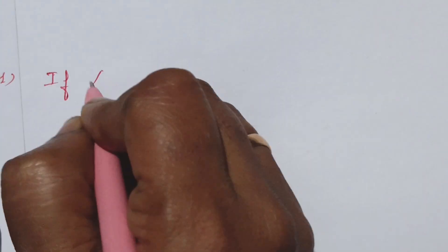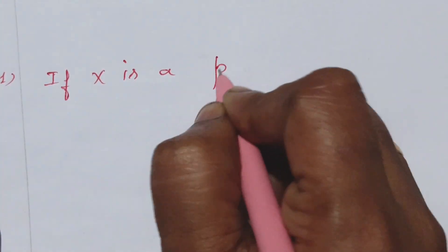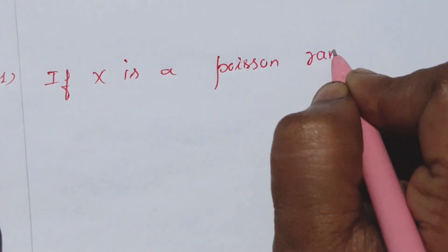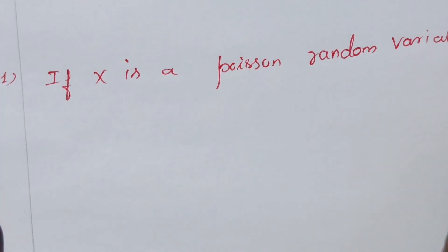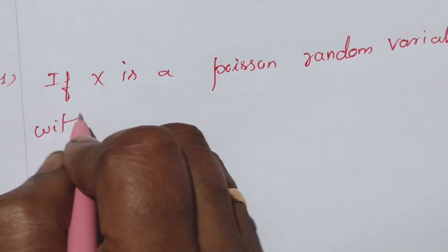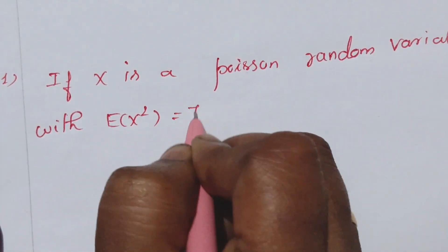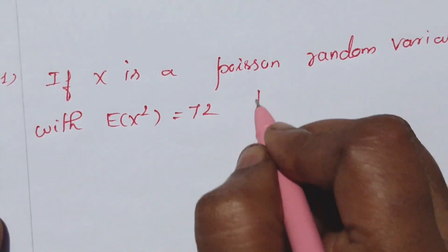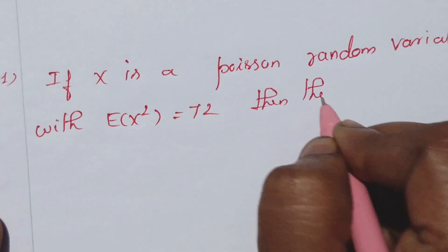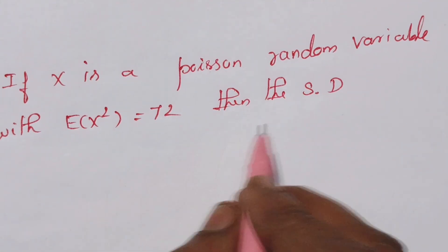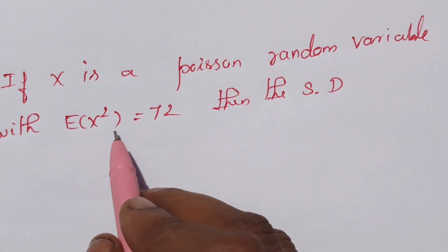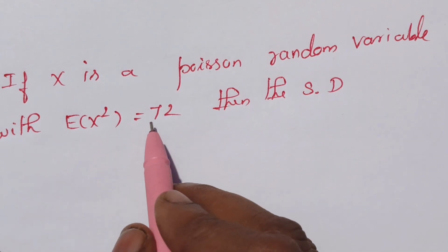Welcome to Sophia Coaching Center. You have a question: if X is a Poisson random variable with E[X²] equal to 72, find the standard deviation. So, what do we know about the formula? We know that E[X²] is 72.